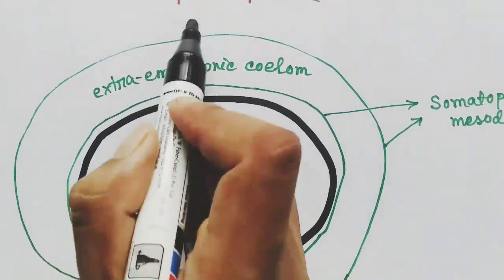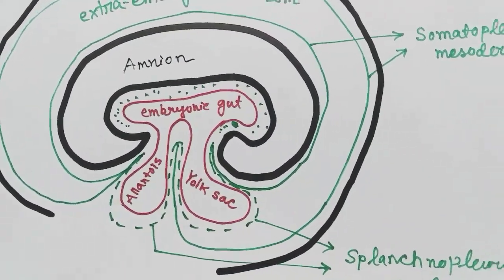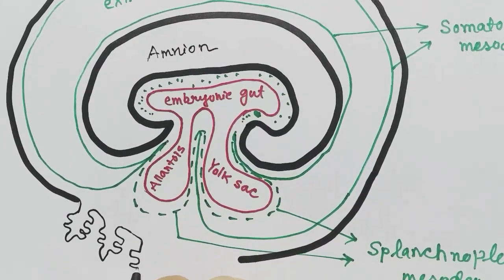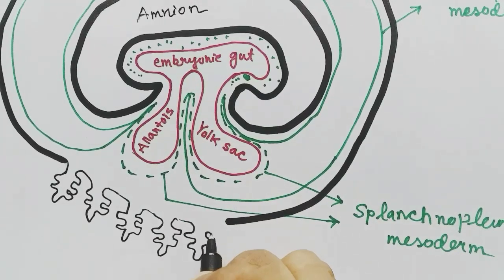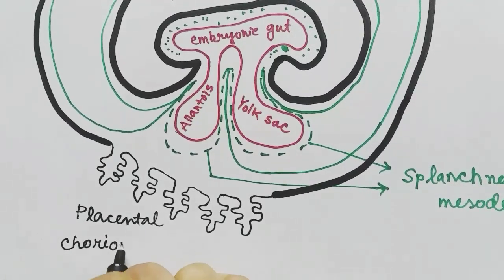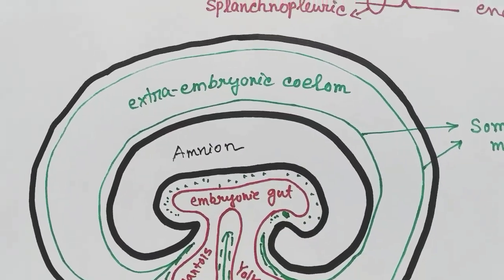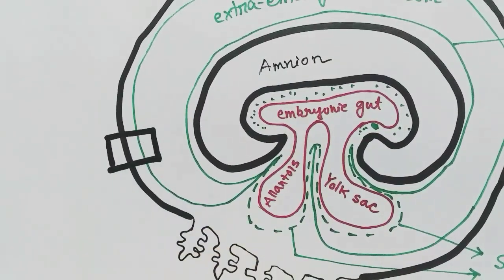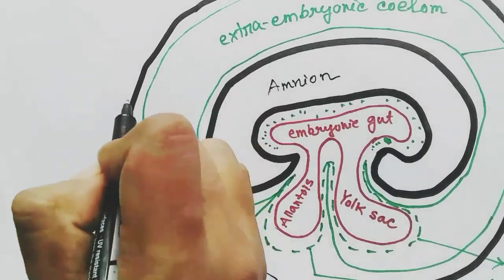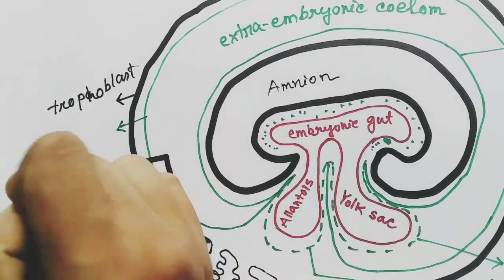The trophoblast cells will cover the whole structure and will contribute to the formation of the placenta. These are the placental chorionic villi, which contribute to the formation of the placenta. This outer layer is called the chorion, and it is composed of trophoblast cells and the somatopleuric mesoderm.